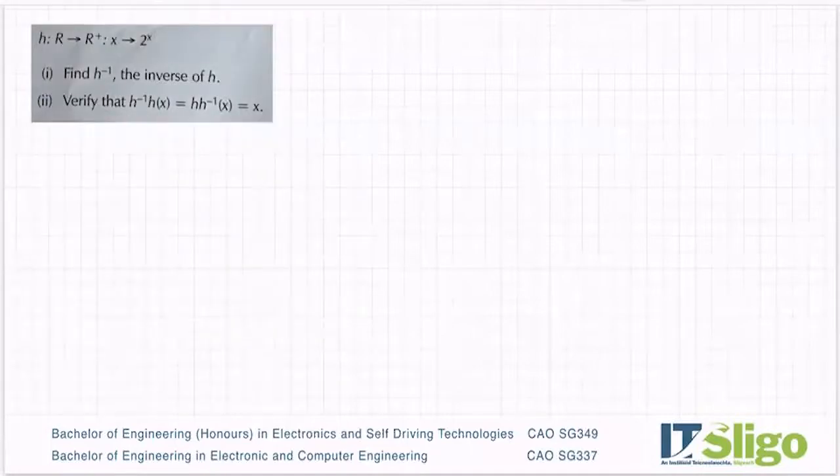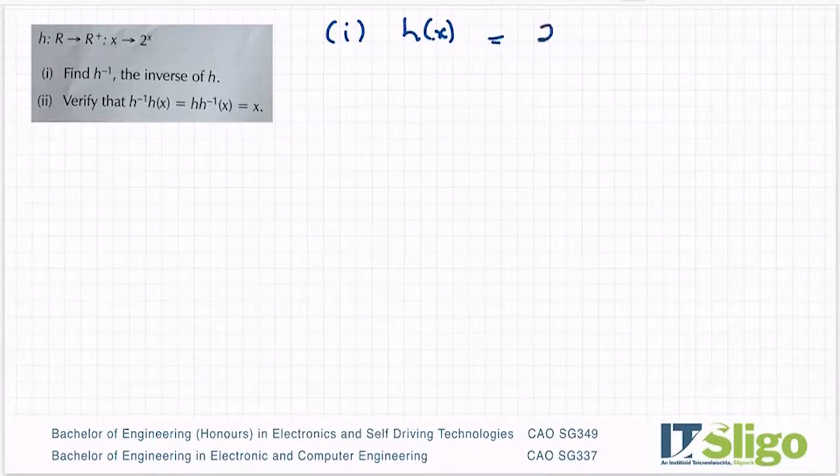Okay, let's do the first part first: find h inverse. So our h(x)—of course there are many ways to write functions, I'm just taking a shorter way of writing it—is 2^x, and I'd like to find h inverse. So remember the rules: write it in terms of y instead of your function name.